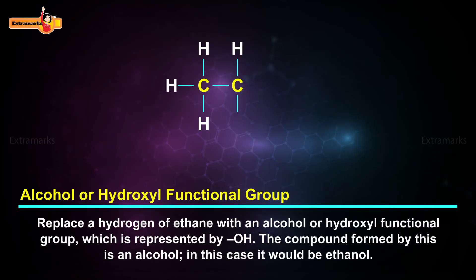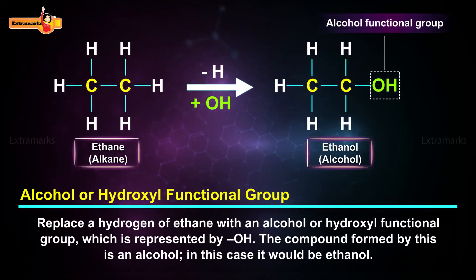Now replace a hydrogen of ethane with an alcohol or hydroxyl functional group which is represented by OH. The compound formed by this is an alcohol. In this case, it would be ethanol.